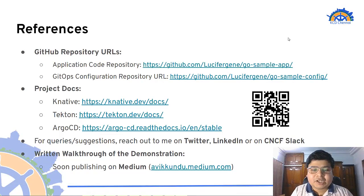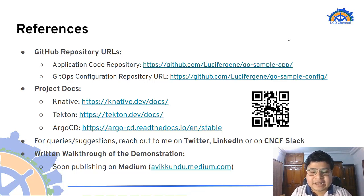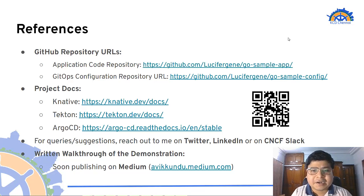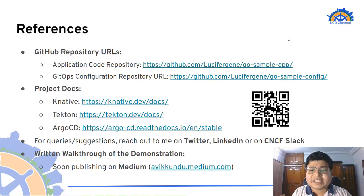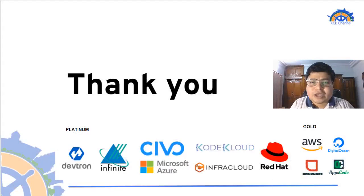With that, we've reached the end of the presentation. You can find the application code repository as well as the GitOps configuration repository at the links shown. I've also listed documentation for the projects we used. If you have any queries or suggestions, you can reach me on Twitter, LinkedIn, or CNCF Slack. You can also scan the QR code to get all my social accounts. I'm also going to write a written walkthrough of the entire demonstration — keep tuned to my Medium page. I hope you loved this presentation. Thank you all for joining me.